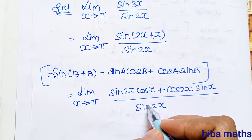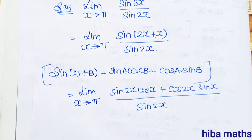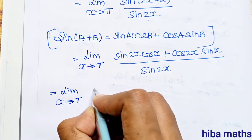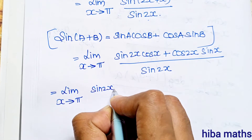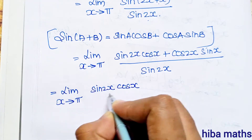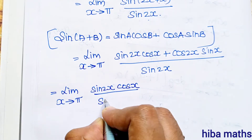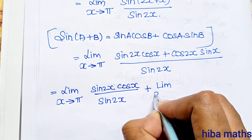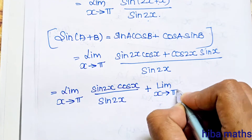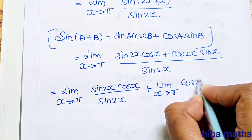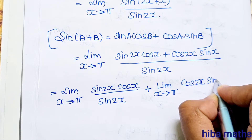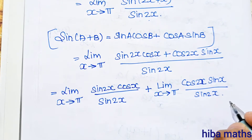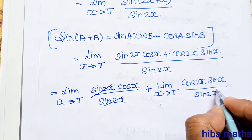Now in the next line, we split: limit x turns to pi of sin 2x cos x divided by sin 2x, plus limit x turns to pi of cos 2x sin x divided by sin 2x. Now sin 2x and sin 2x cancel.